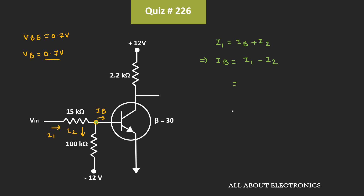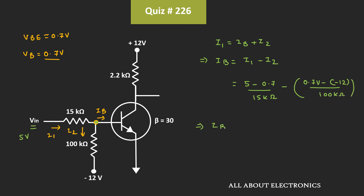We have been given that the input voltage Vin is equal to 5V. That means current I1 is equal to (5 − 0.7)V divided by 15kΩ, and similarly current I2 is equal to 0.7V divided by 100kΩ. That means current Ib is equal to 0.286mA minus 0.127mA, which gives Ib equal to 0.159mA.